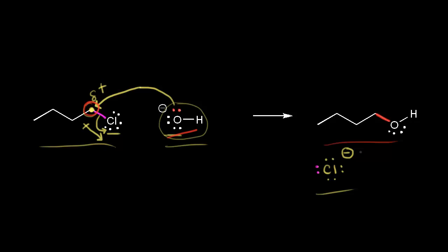The goal is not to understand every single thing about this organic chemistry mechanism in great detail right now. Our goal right now is just to appreciate how nucleophiles and electrophiles are used in organic chemistry mechanisms, and start to get a feeling for how these curved arrows show the movement or flow of electrons.